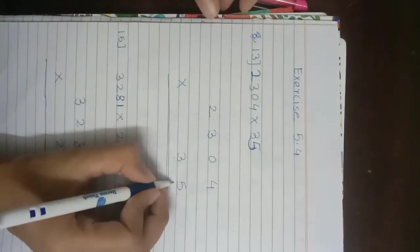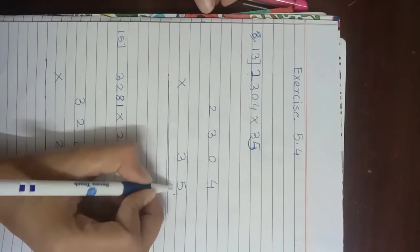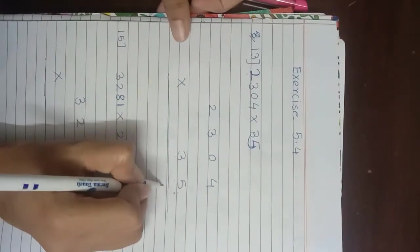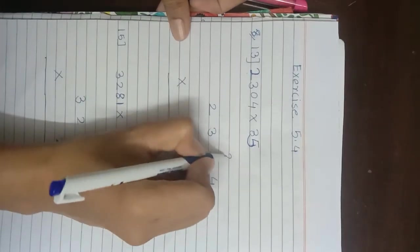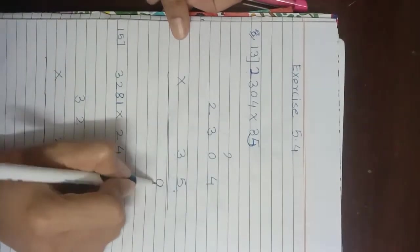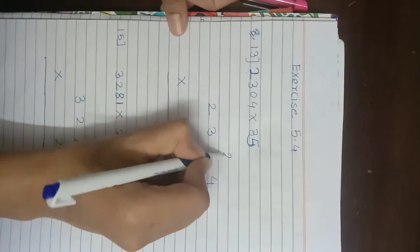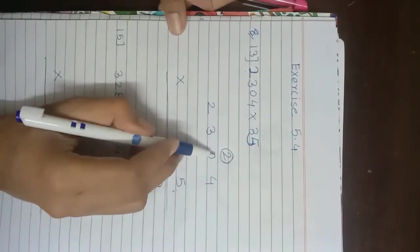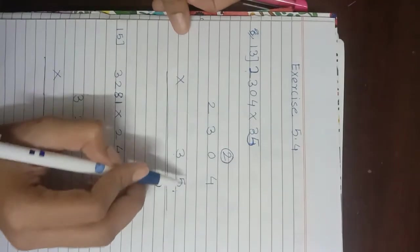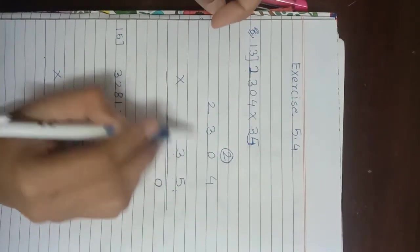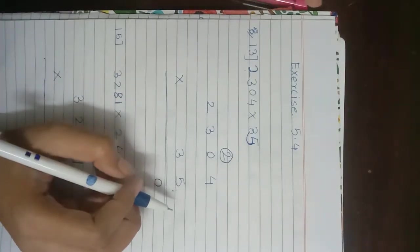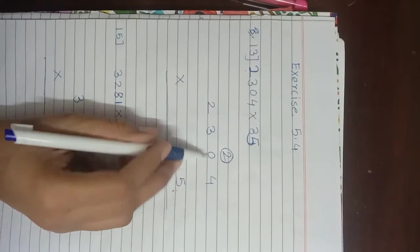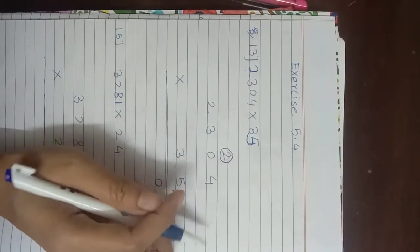We multiply by 5 first. 4 multiplied by 5 is 20, so we write 0 under the ones place column and carry 2 to the tens place. 5 multiplied by 0 is 0; 0 plus the carry 2 is 2, so we write 2 in the tens place.